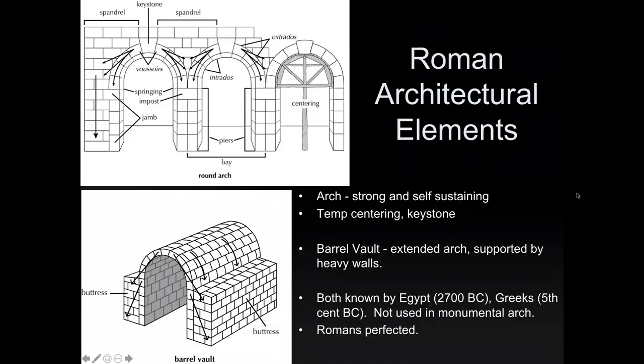Some of the basics of Roman architectural elements. The first one is the arch, and the arch is very useful. We saw an early version of the arch when we were looking at the Khufu Pyramid in Giza specifically. What's useful about the arch is that it's strong and self-sustaining — much stronger than the post and lintel type of construction that we've seen in most of the architecture we've looked at.